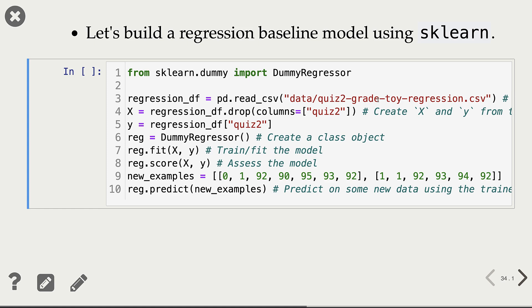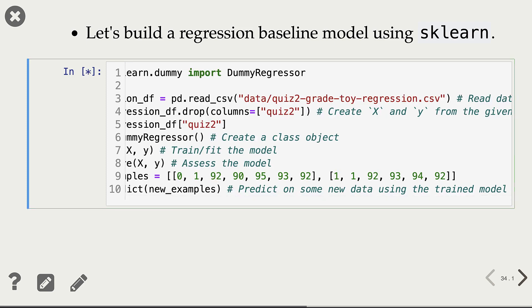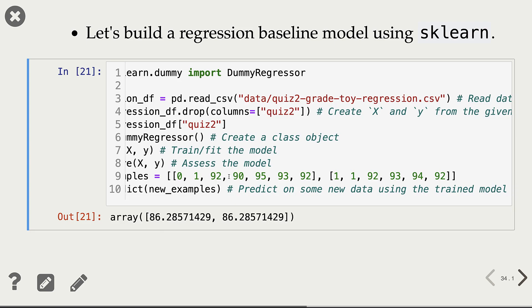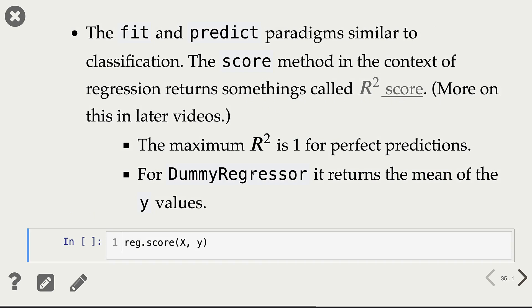Let's train a regression baseline model using scikit-learn. We are following similar steps: importing DummyRegressor, reading the data using our quiz-2 grade prediction toy dataset for regression, separating X and Y, creating a class object, fitting the model, scoring the model, and predicting on new examples. These are the predictions — continuous values, since this is a regression problem. The fit and predict paradigms are similar to classification, but the score method in regression is not accuracy. It returns something called the R-squared score.